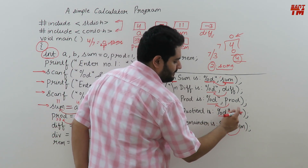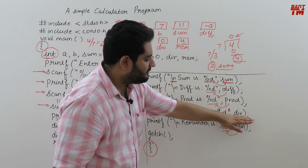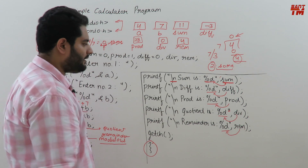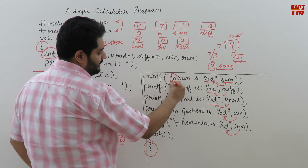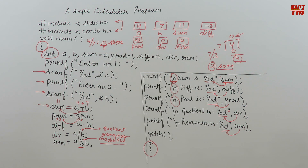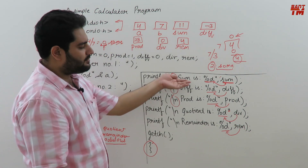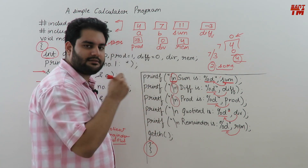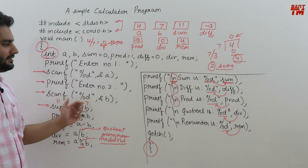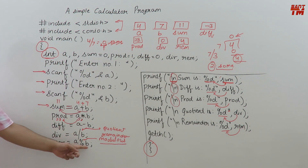Note that the double quote ends before the comma — it is not carried forward after the comma. The double quote must be closed before the comma, and after the comma we write the variable name so its value is assigned to %d. The slash-n is used to move output to the next line. For example, slash-n will cause the cursor to move to the next line on the console screen, so sum, difference, product, and quotient each appear on separate lines.